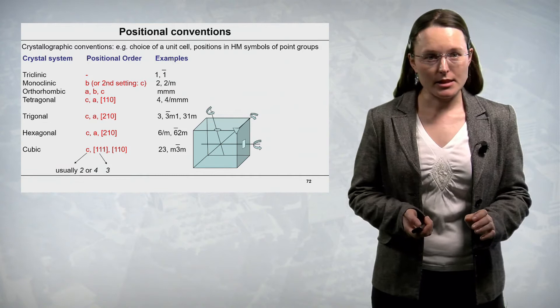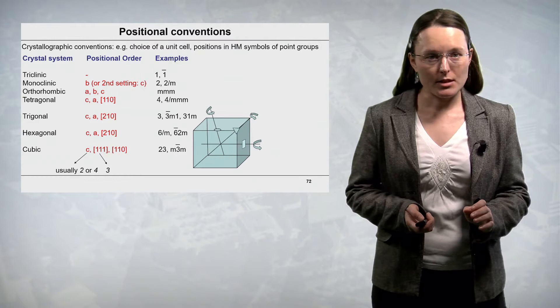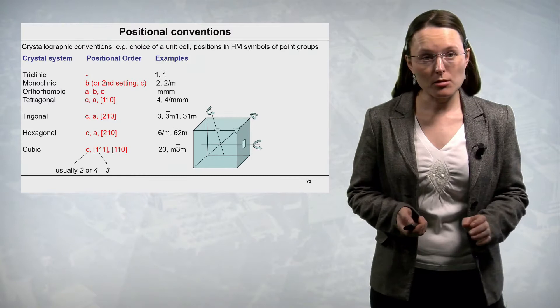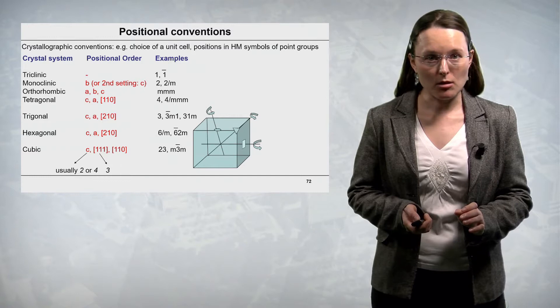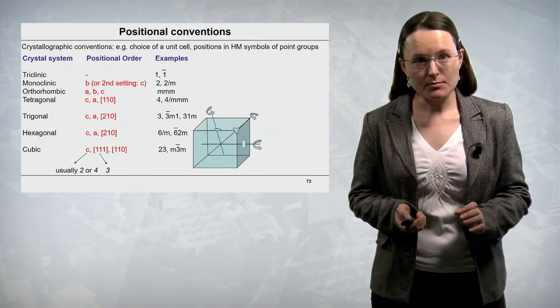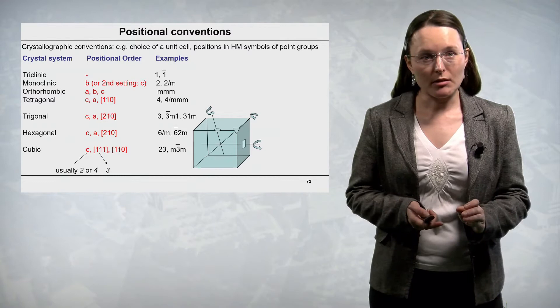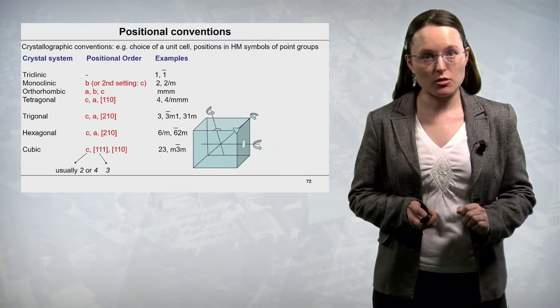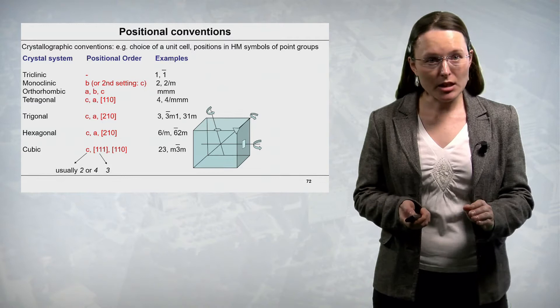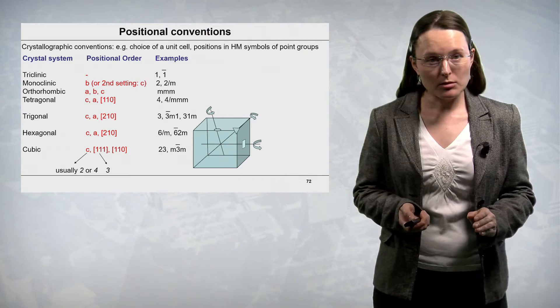In the tetragonal crystal system, the first symbol corresponds to the special direction of the C cell constant. The second symbol, if present, corresponds to the A direction. The third symbol corresponds to the crystallographic direction 1,1,0. For instance, in the symbol 4/M MM, the first part 4/M corresponds to the direction C — the fourfold symmetry axis is parallel to C and the perpendicular mirror plane is perpendicular to that direction. The second mirror plane is perpendicular to the A direction, and the third symbol M is a mirror plane perpendicular to the crystallographic direction 1,1,0.